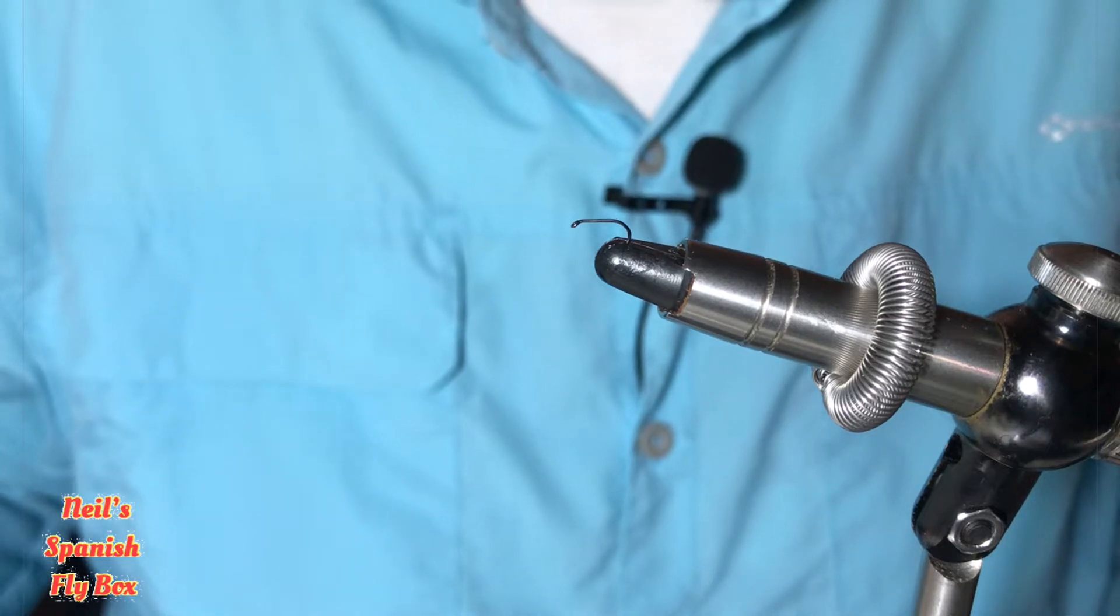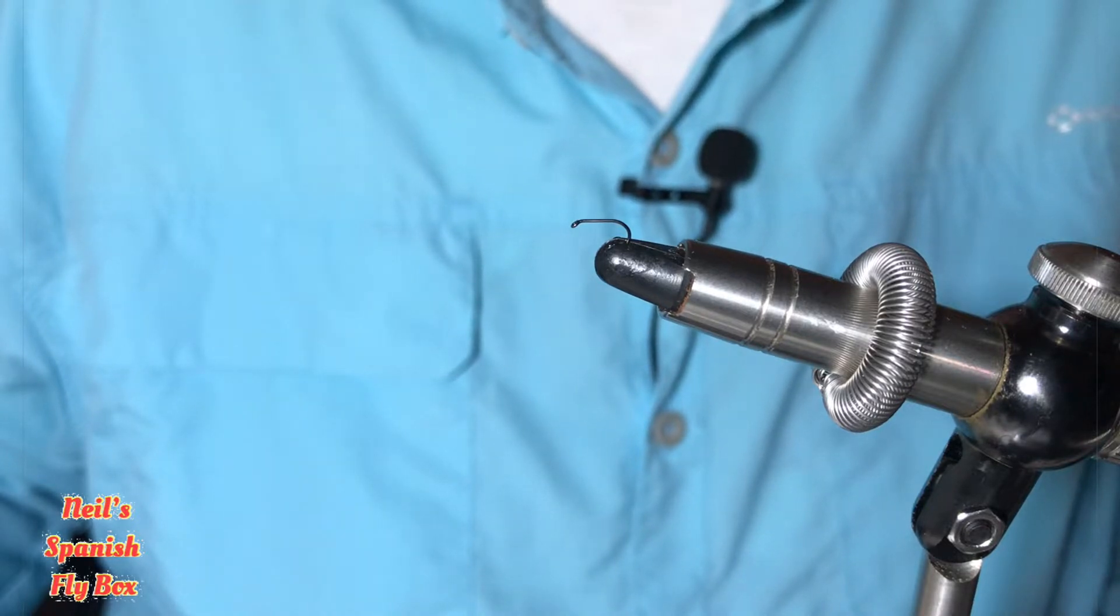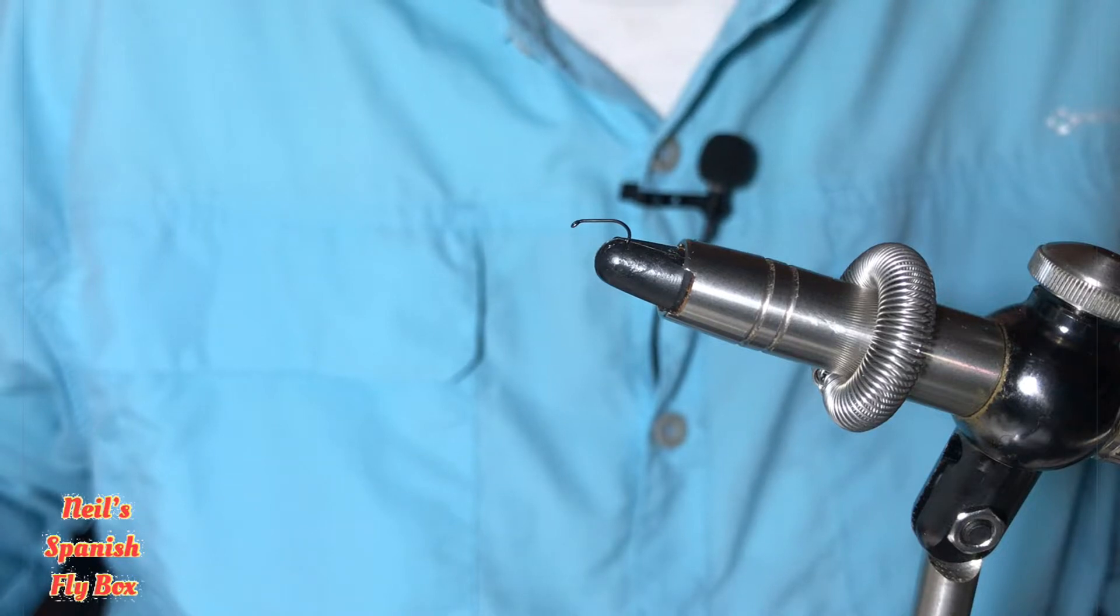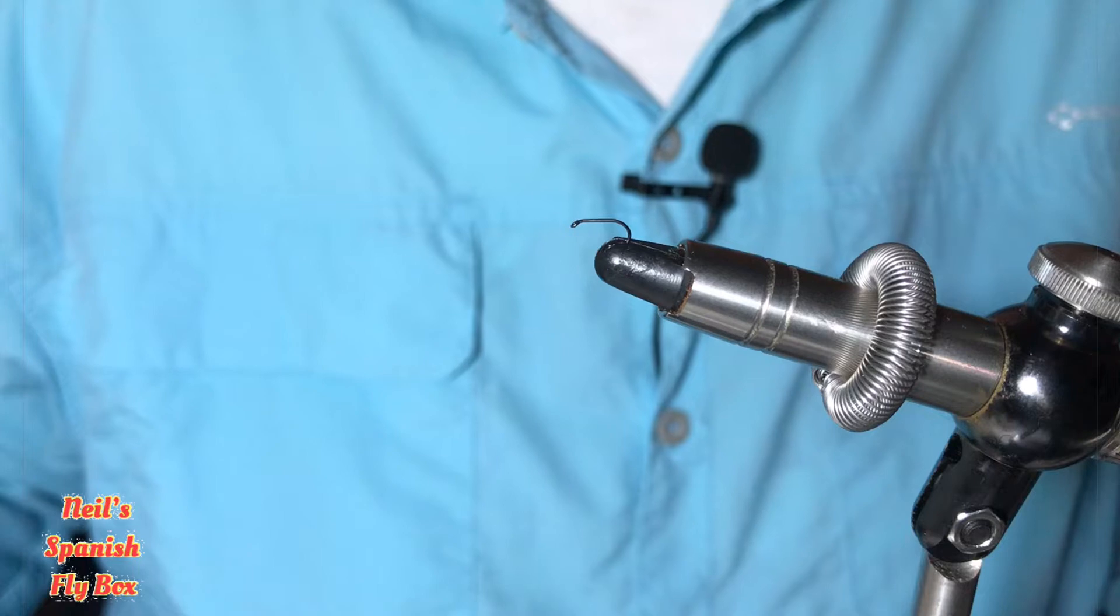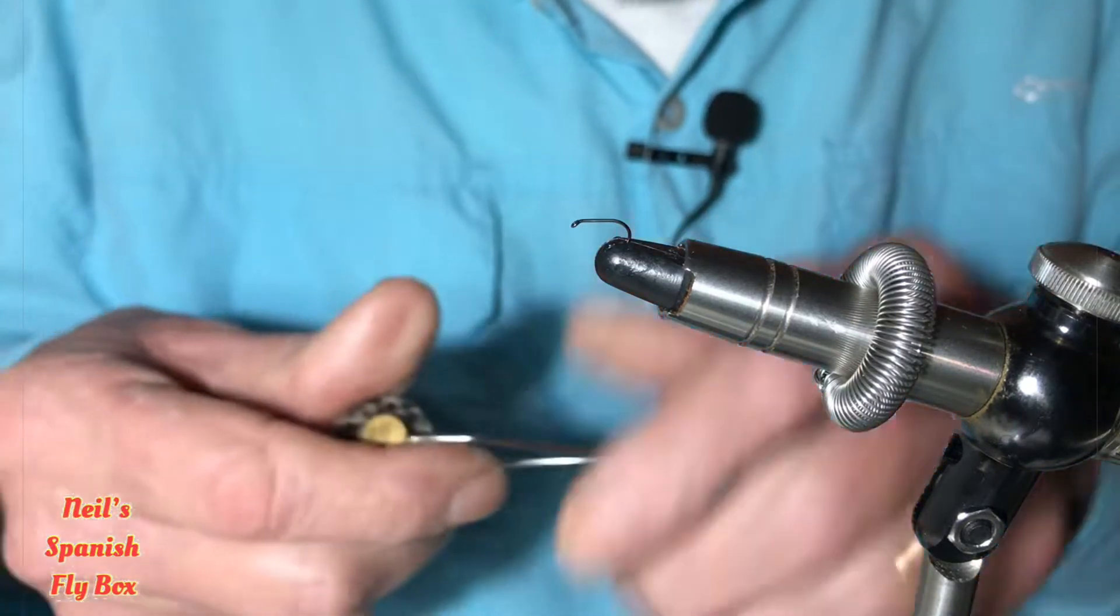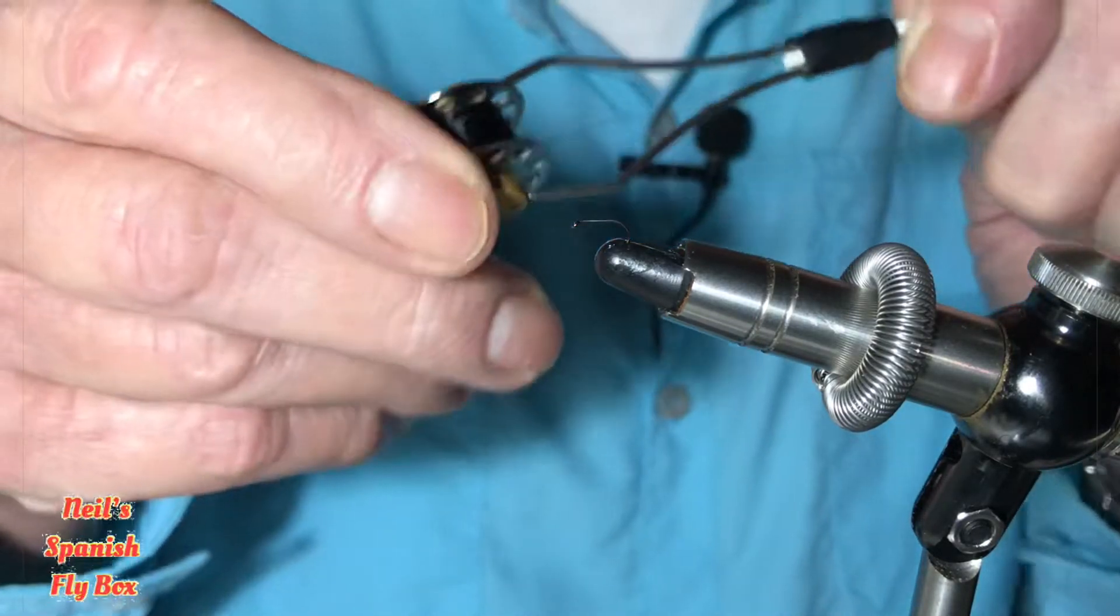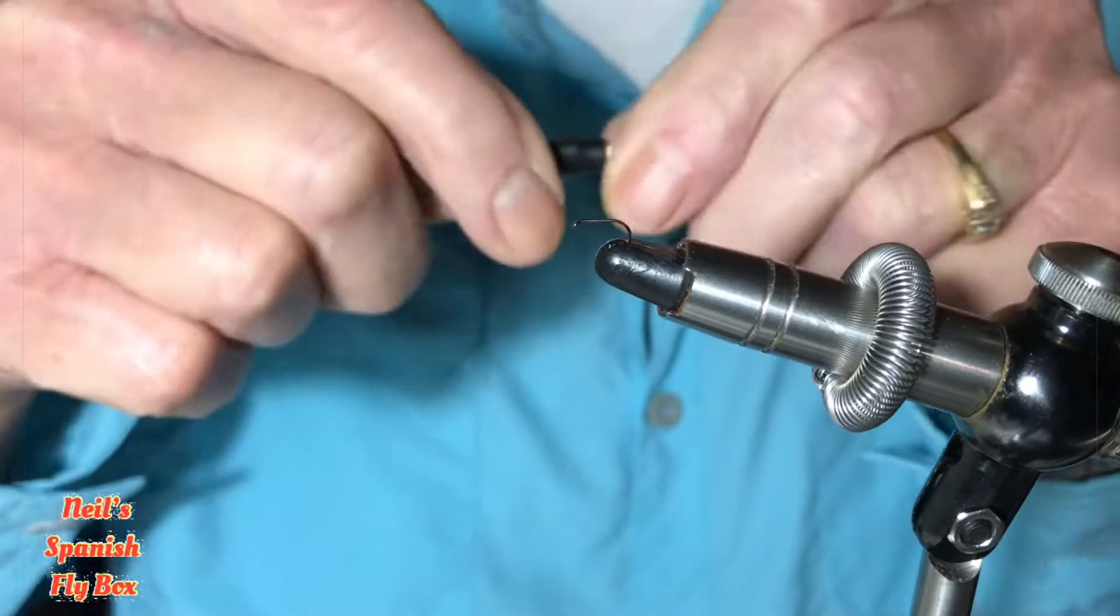Today's tying is a caddis fly, and when it's complete I have to say it looks more like a diptera than it does a tricoptera, but it's definitely a tricoptera because of the wing style. Now I'm going to give you the materials as I go along. First I'm going to mount with black thread, and this is a 12-0 which I think is 50 denier.